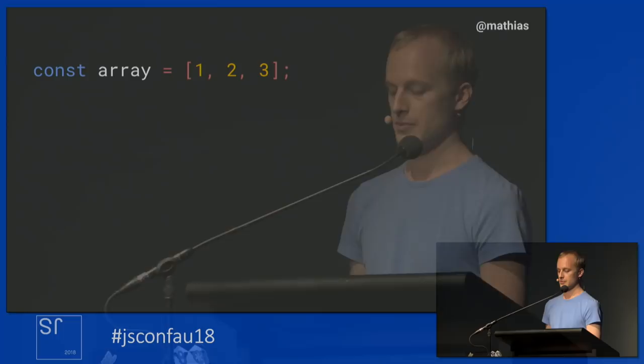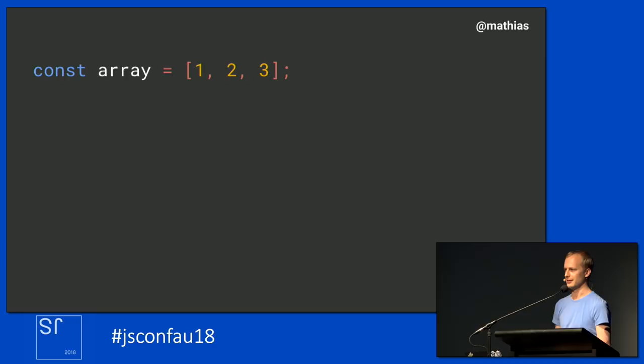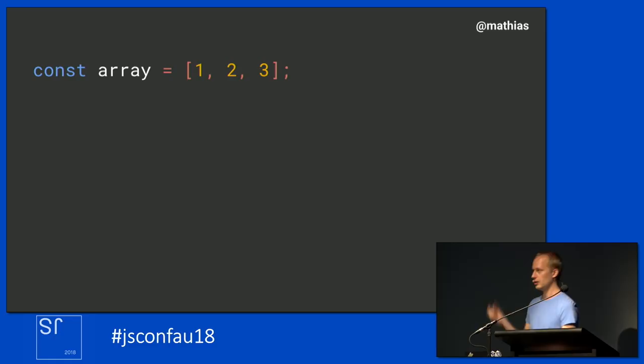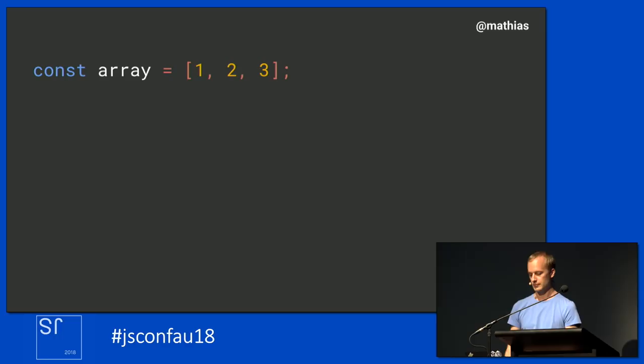Whenever you're running JavaScript code, V8 keeps track of what kind of elements each array contains. This information allows V8 to optimize any operations on the array specifically for this type of elements. For example, when you call reduce, map, or forEach on an array, V8 can use that information to optimize those calls. If you ask the typeof operator in JavaScript, it would tell you that all three elements are numbers. But behind the scenes, in the JavaScript engine itself, we can make a more precise distinction. The elements kind for this array is 'packed SMI elements.' SMI refers to the particular format V8 uses to store small integers — that's what it stands for: small integer.